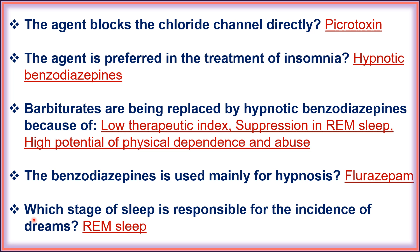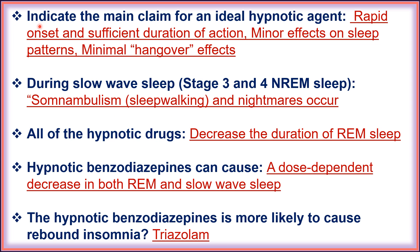The stage of sleep responsible for the incidence of dreams is REM sleep. The characteristics of an ideal hypnotic agent include rapid onset and sufficient duration of action, minor effect on sleep pattern, and minimum hangover effects. During slow-wave sleep (stages 3 and 4) and REM sleep, somnambulism (sleepwalking) and nightmares occur.